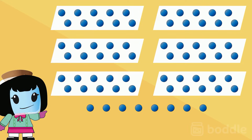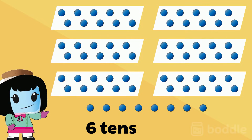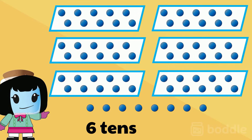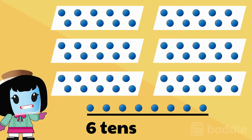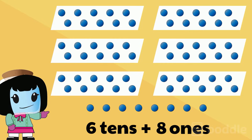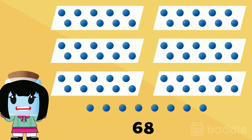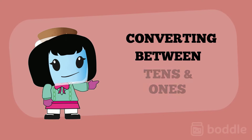Next, let's count the number of tens and ones from the dots below. Can you guess how many tens we have here? That's right, we have six tens because there are six boxes that have ten dots each. Notice that there are eight dots that are not boxed into groups of 10, so we have eight ones. In total we have 68 dots.